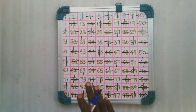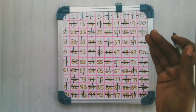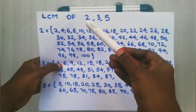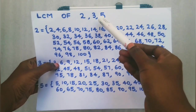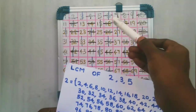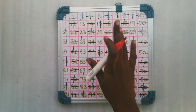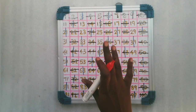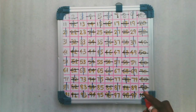Those are the multiples of 3. Now we are going to draw a circle for all multiples of 5 with red color.